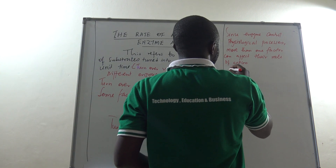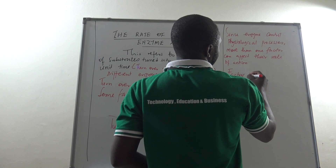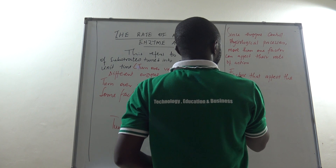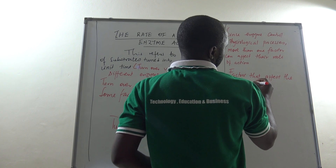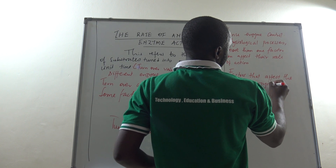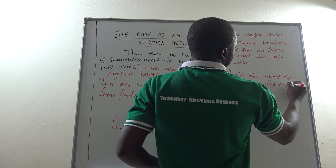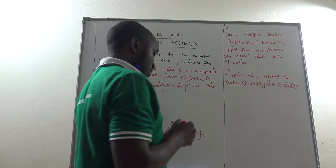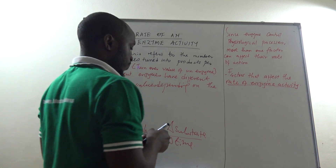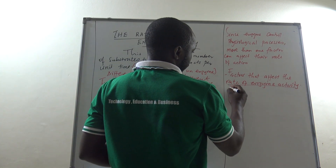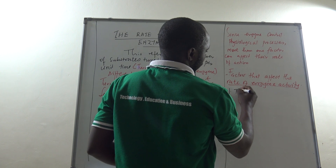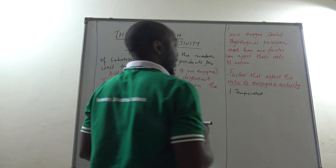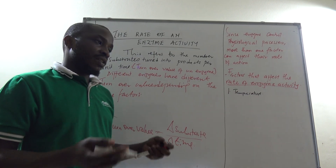We can conclude by looking at factors that affect the rate of enzyme activity. What are those factors? Factor one is temperature. We shall come back and expand on how temperature affects enzyme activity.